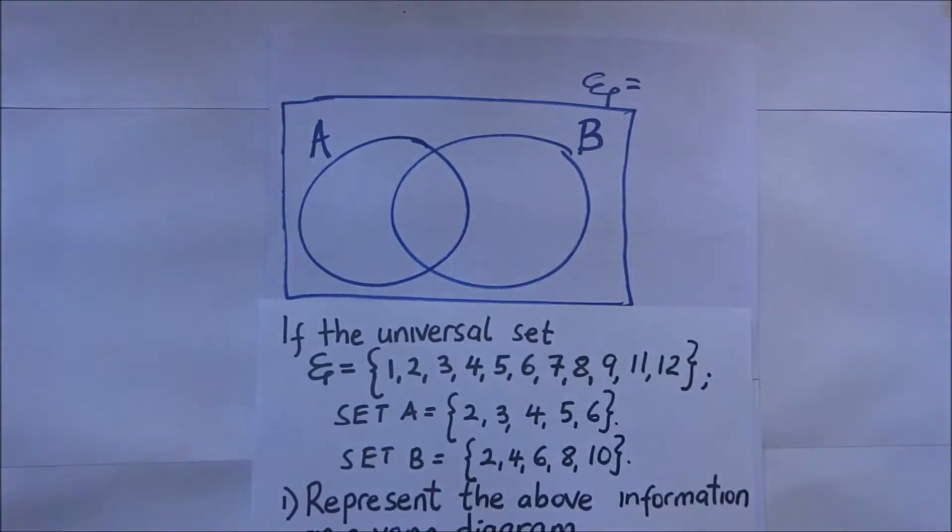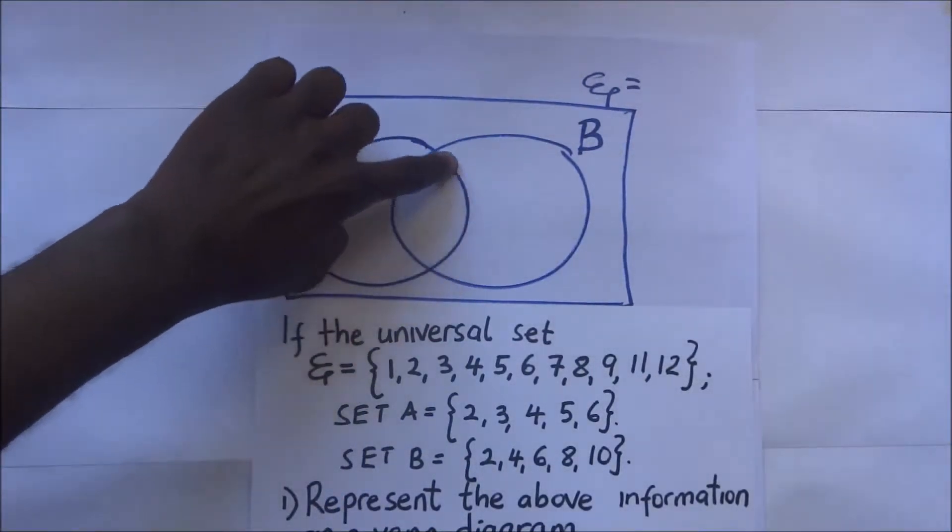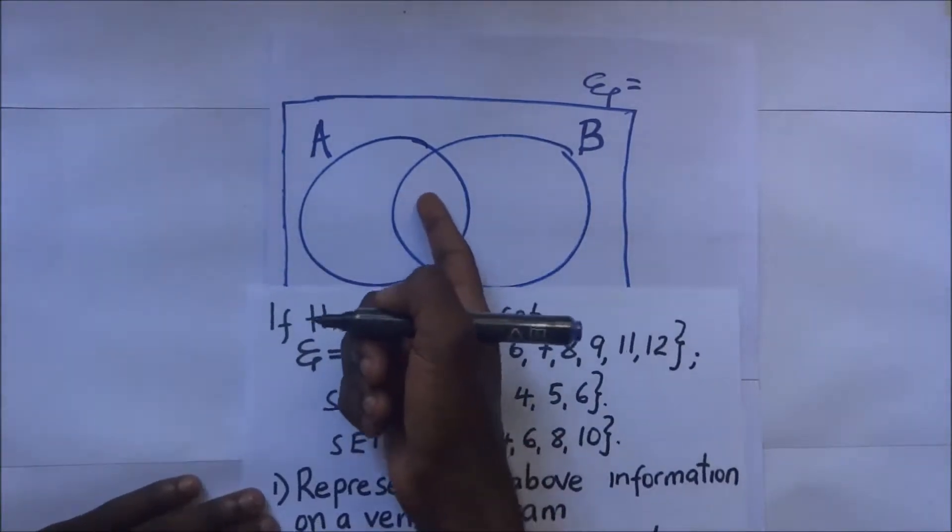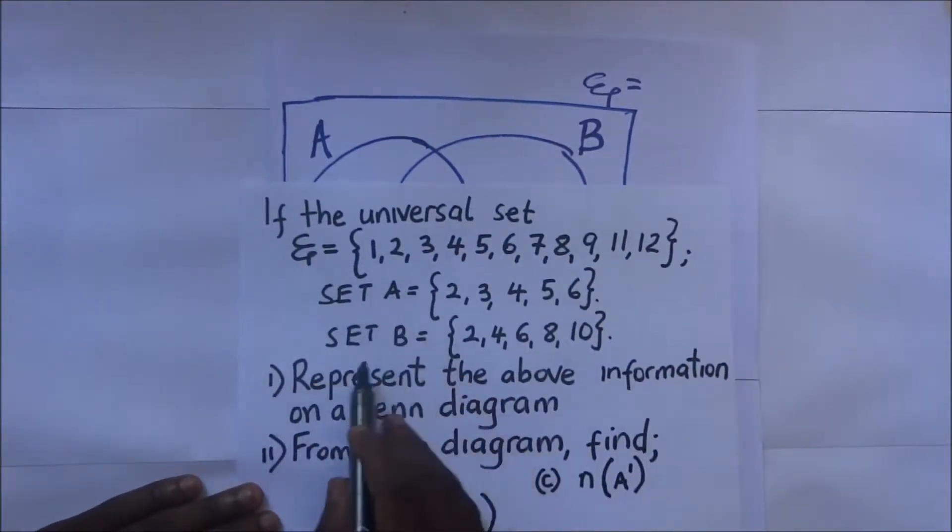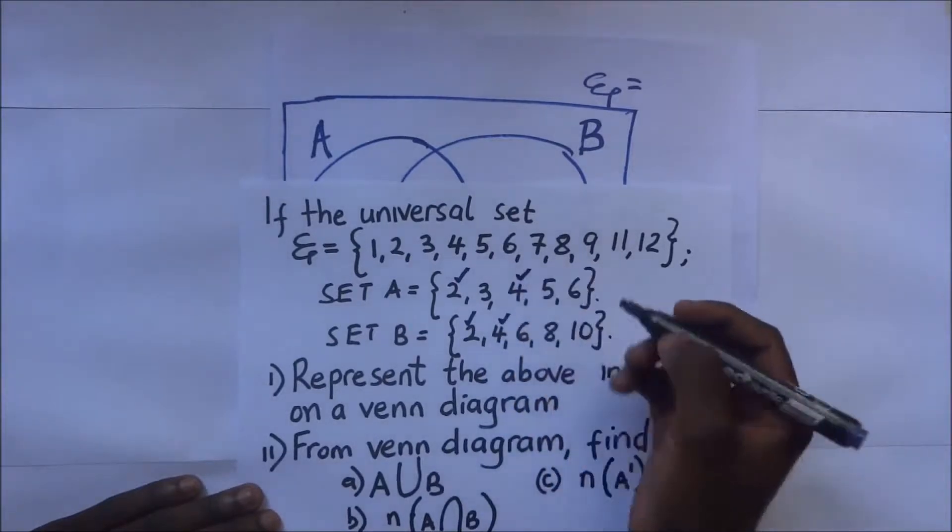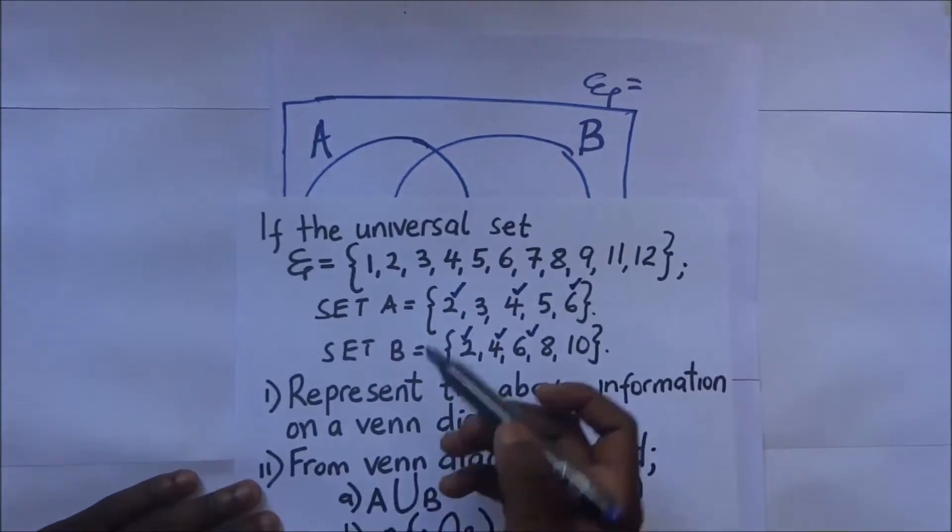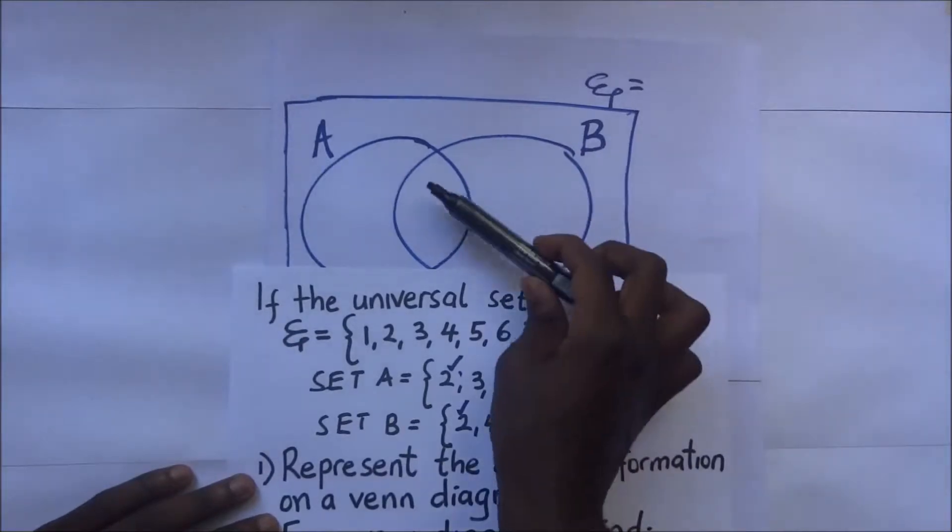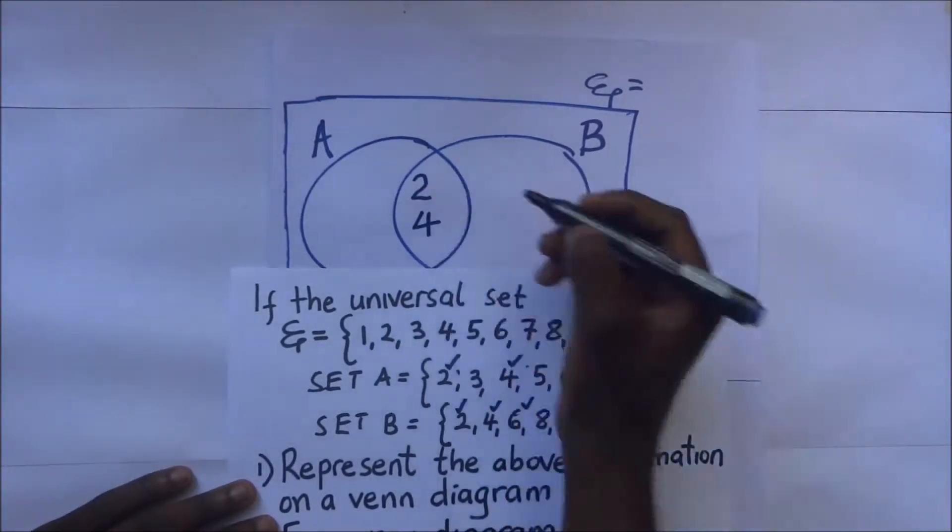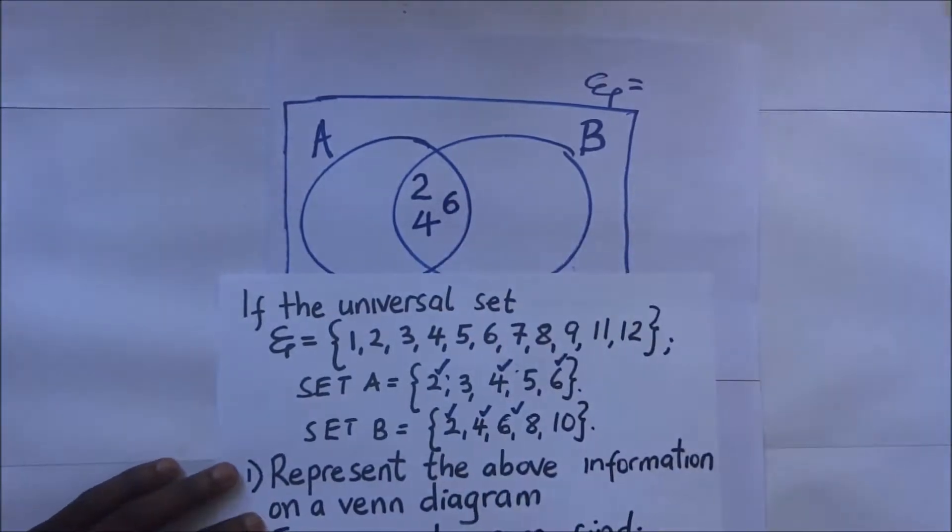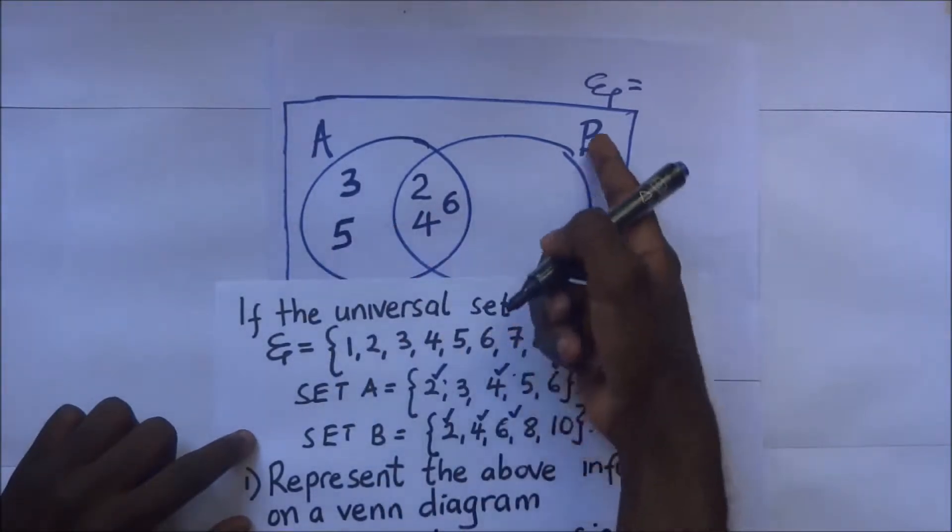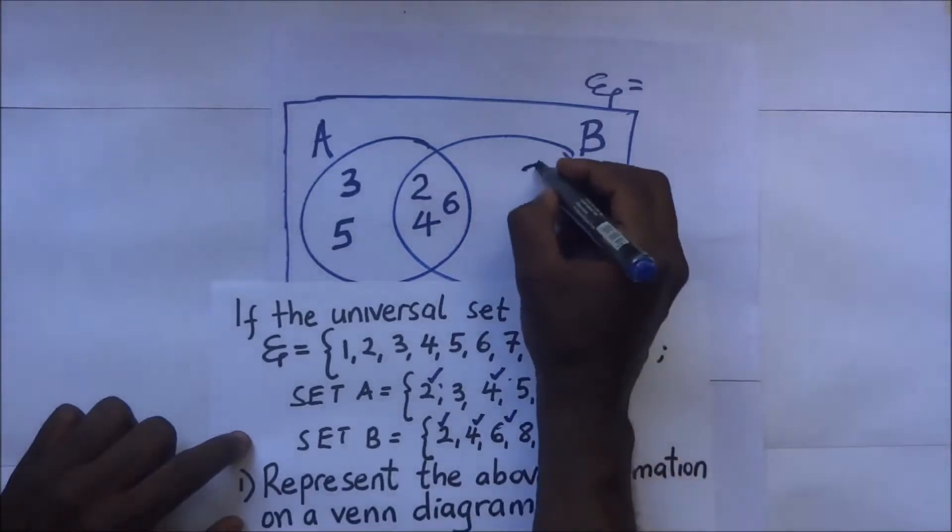Now if set A and set B are sharing any items, then it means the items they are sharing have to be in the middle here. We have to first find those intersection members that are shared between A and B. If you look at set A and set B, 2 is a common term, and we have 4 and 6. Those are the elements that are shared. The rest that are not shared - for set A, we have 3 and 5. Likewise in B, those that are not shared are 8 and 10.